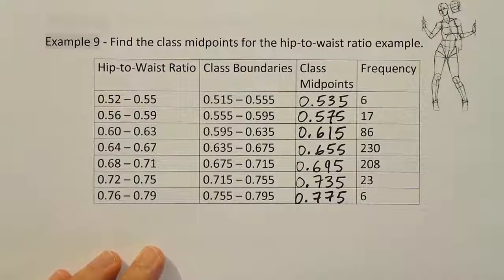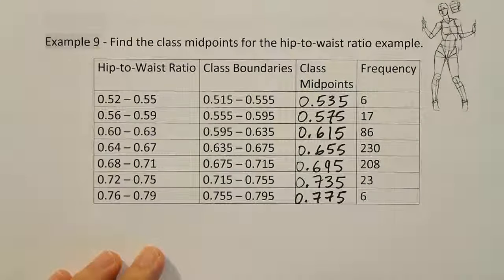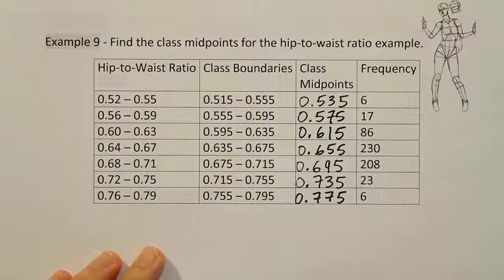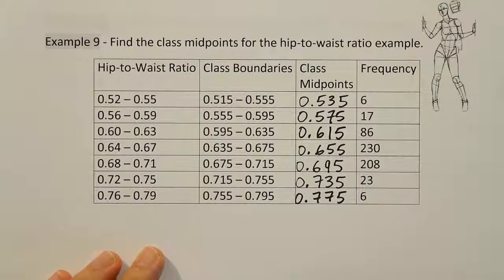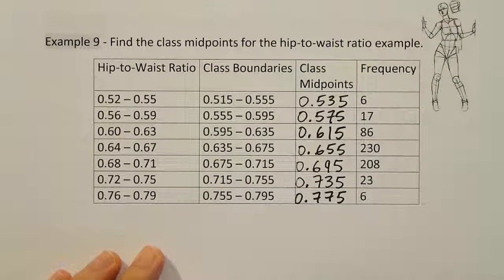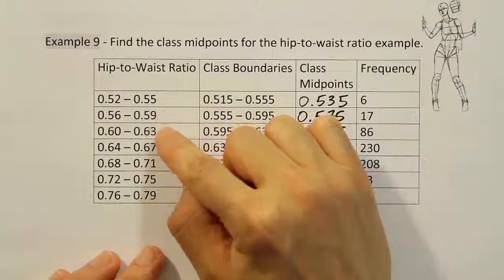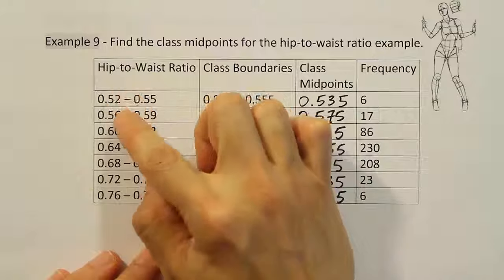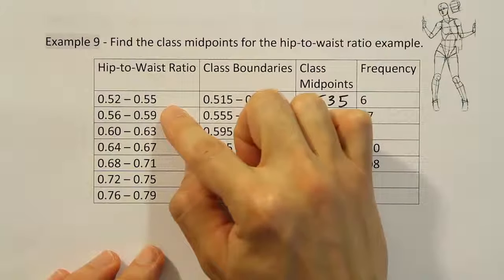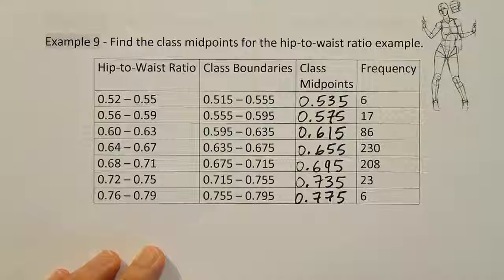Later on we'll be looking at problems where we have to come up with that class width ourselves, where we're not just looking at someone else's work and deciding what they used. And when we do that it's a little bit different. But for this problem since the table's already created for us, we just have to look at the two consecutive either lower class limits or upper class limits and we can identify what width was used to create the table.